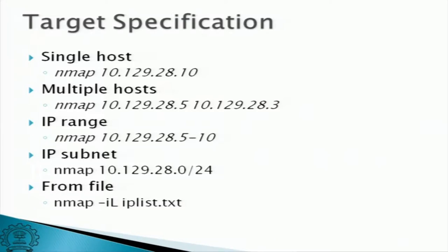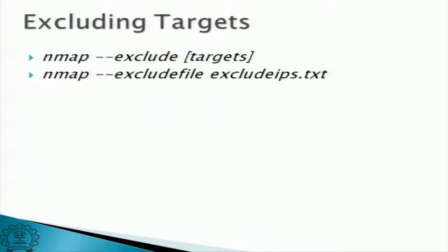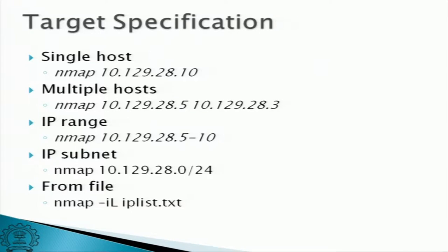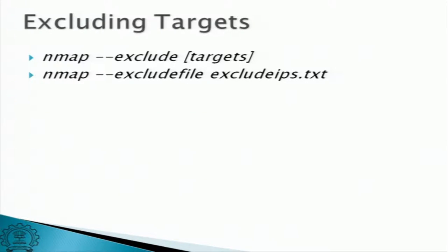These are the various ways to provide input to nmap. We can give a single IP, multiple IPs separated by spaces, a range using a dash, or even IPs from a file. Sometimes if you are giving a range or subnet of IPs you might want to exclude some of them. The --exclude option accepts all the specifications given, and the --excludefile option accepts IPs in a text file.